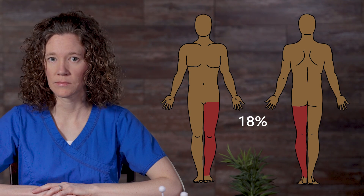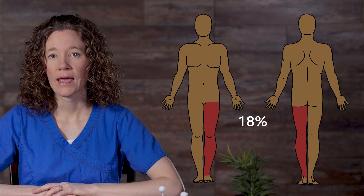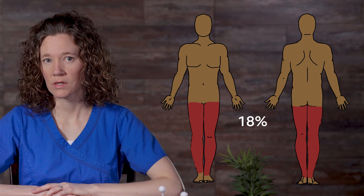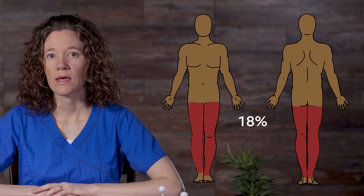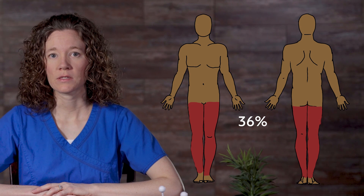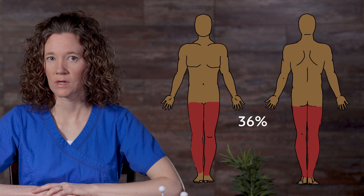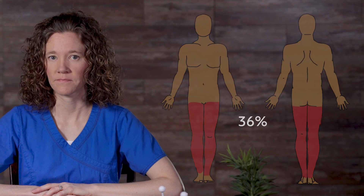This estimation allows the emergency medical provider to obtain a quick estimate of how much body surface area is burned. For example, if a patient's entire left leg, 18%, and entire right leg, 18%, are burned, about 36% of the patient's body surface area is affected.